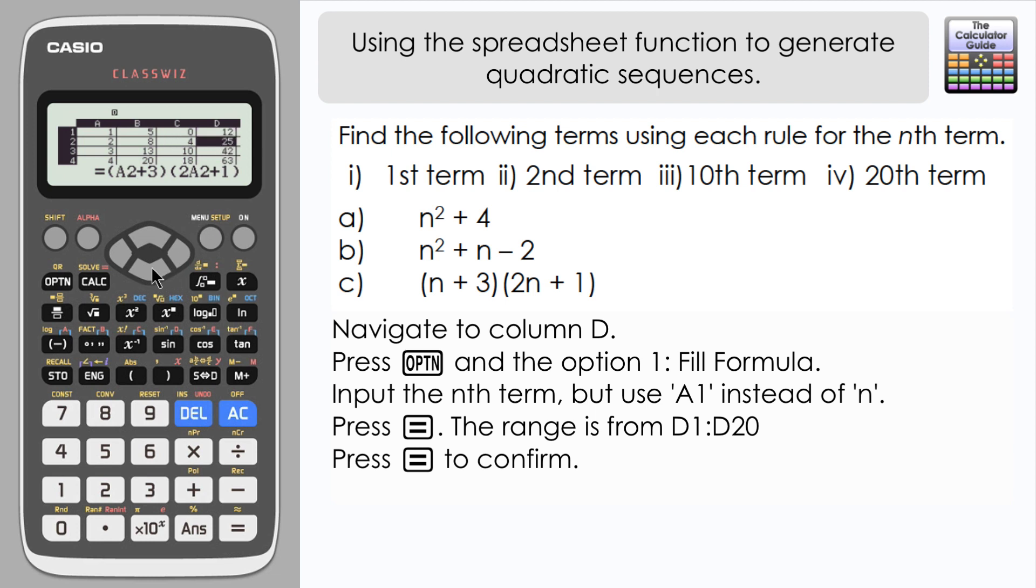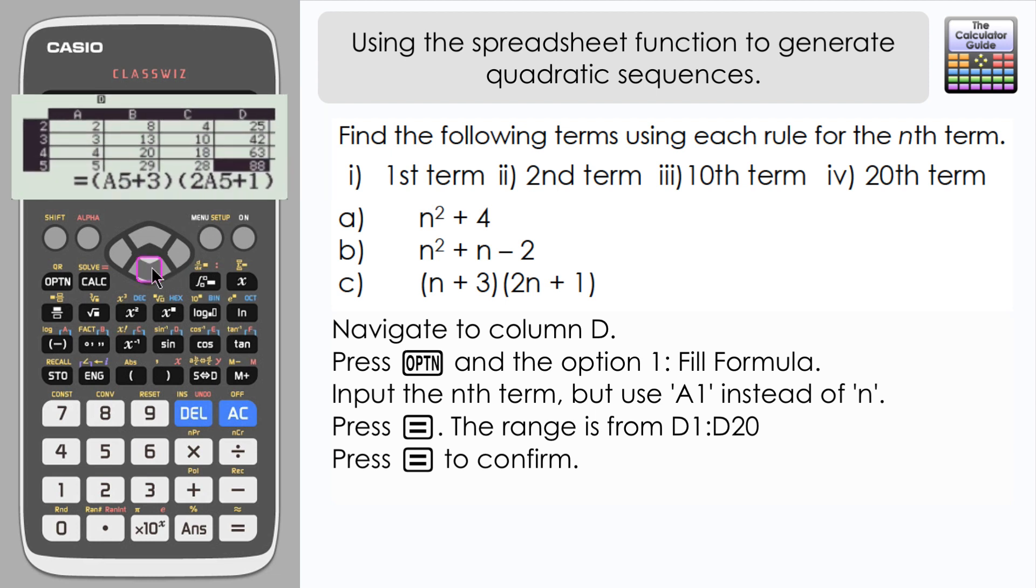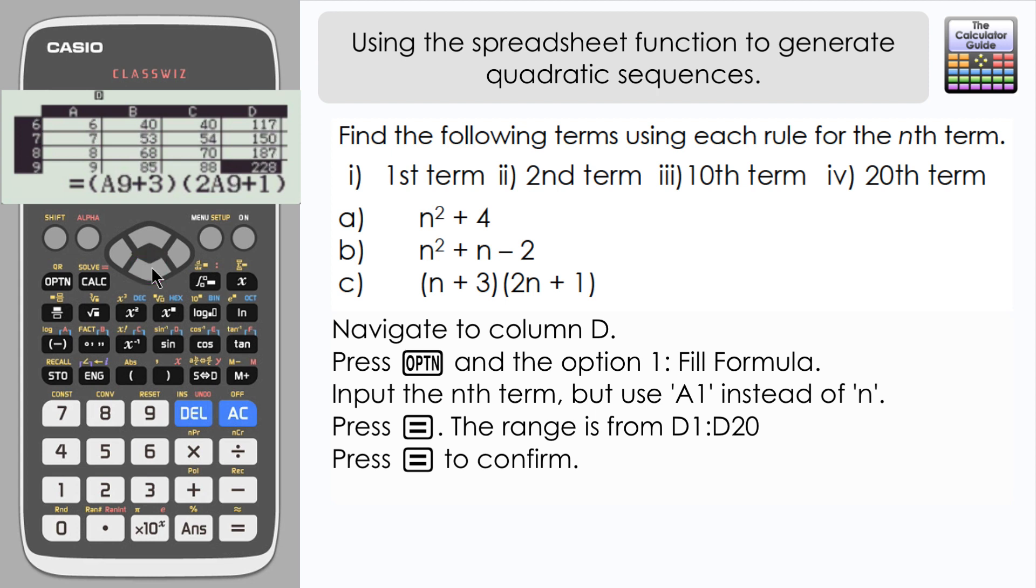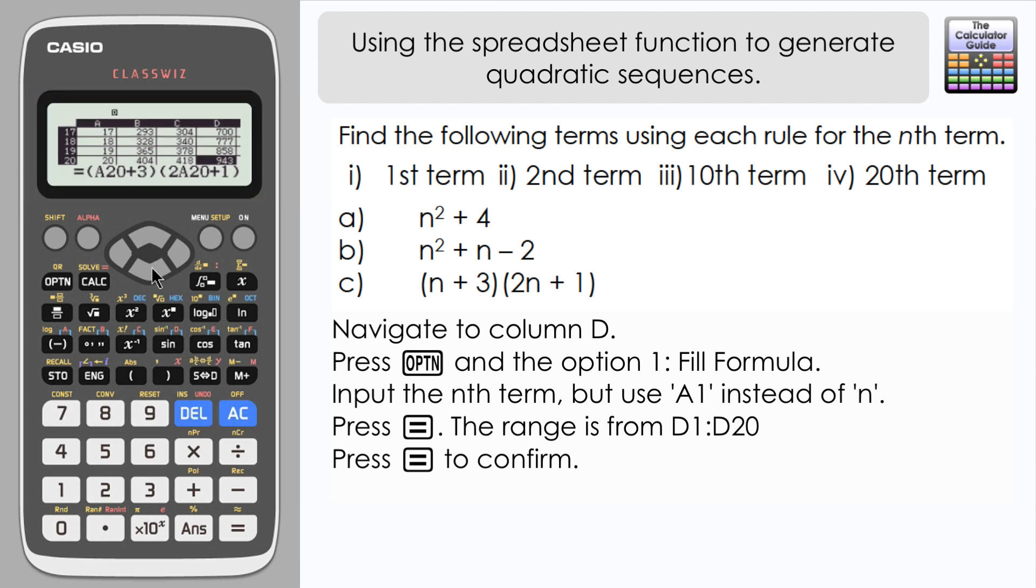And then in column D we've got our first term of 12, our second term of 25. Let's just navigate down to 10, that's 273, and lastly 20, which is 943.